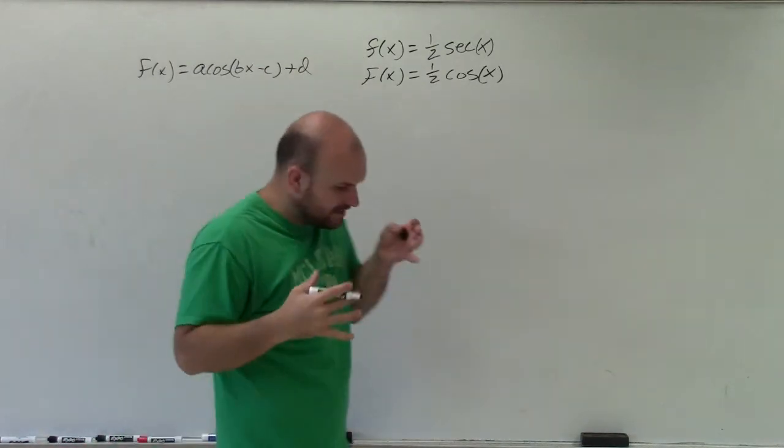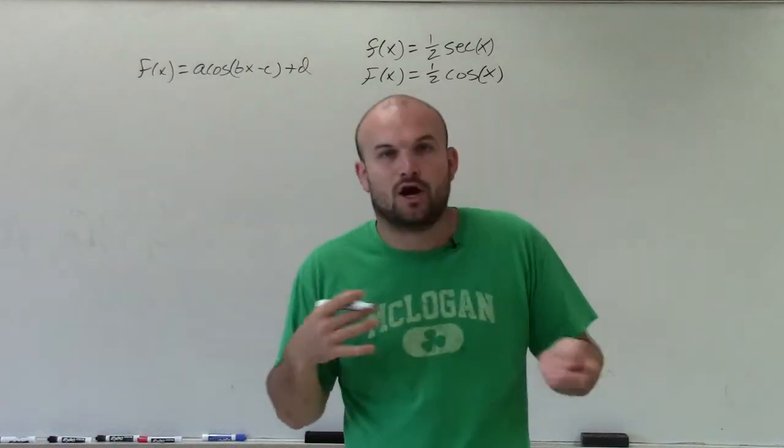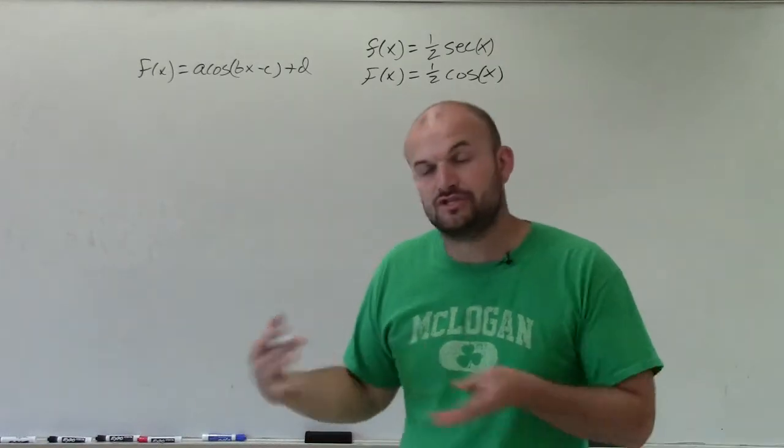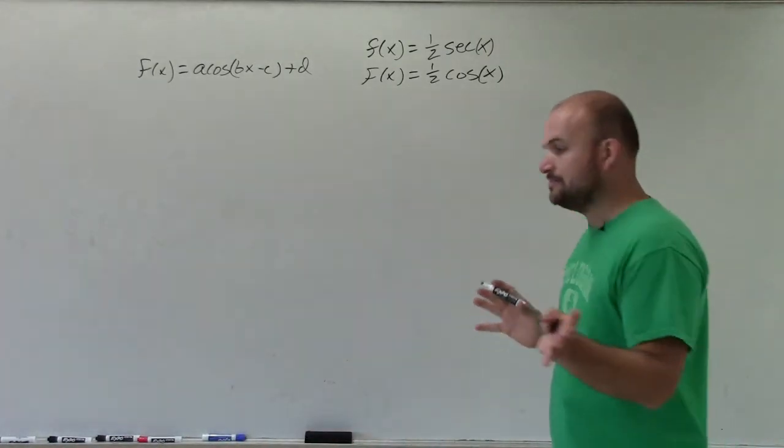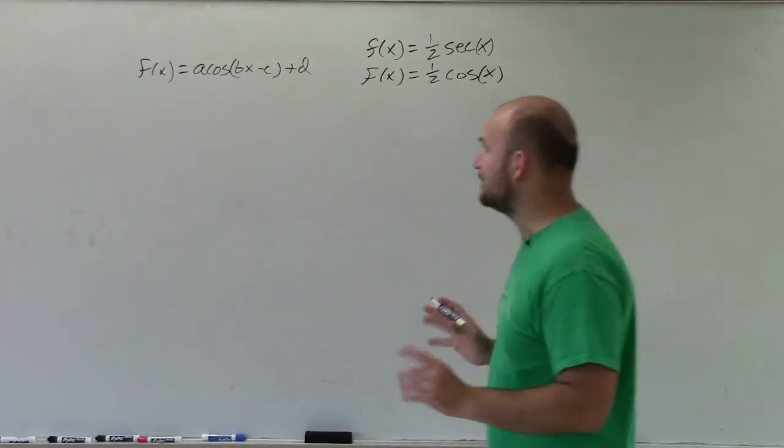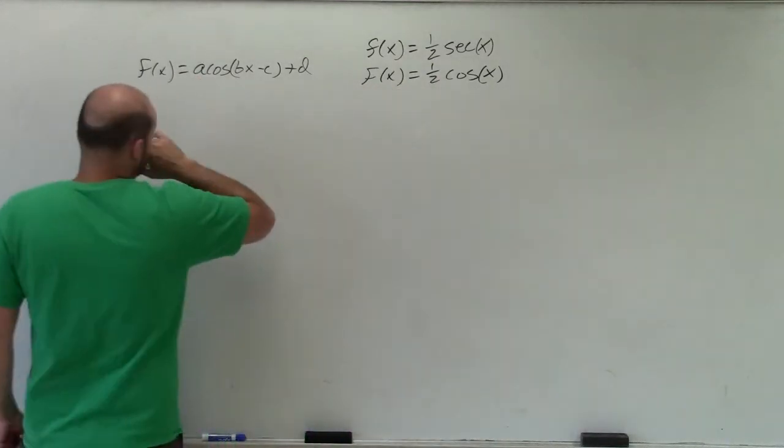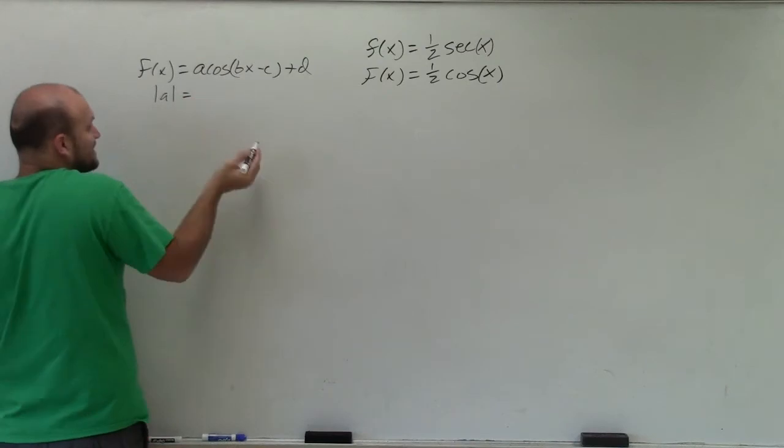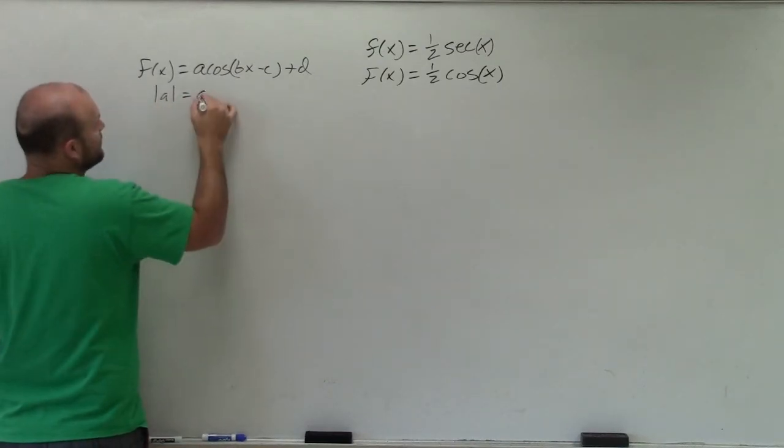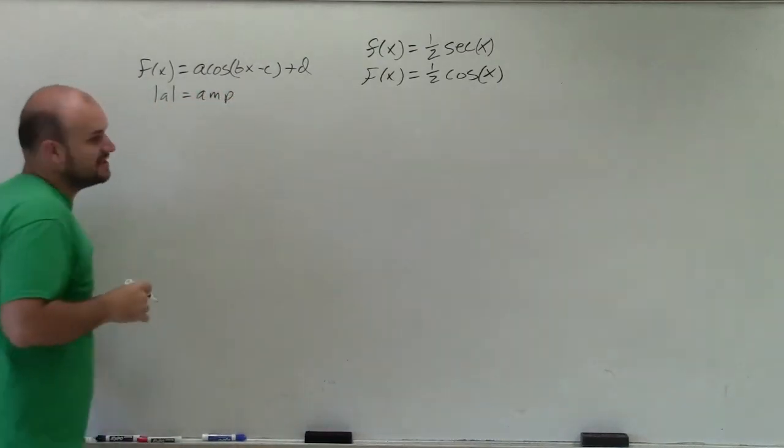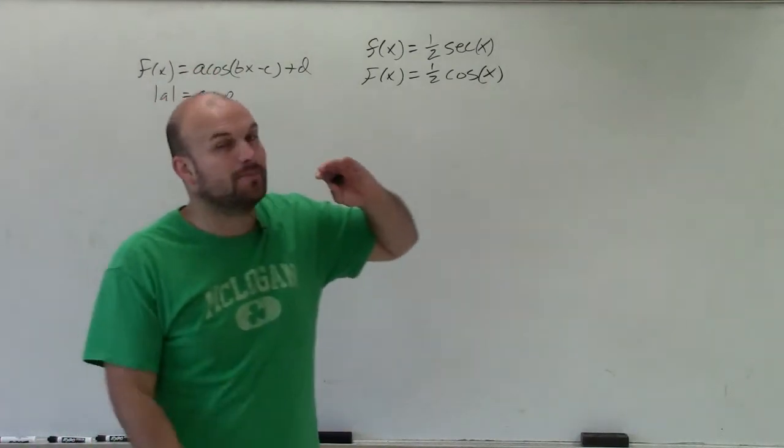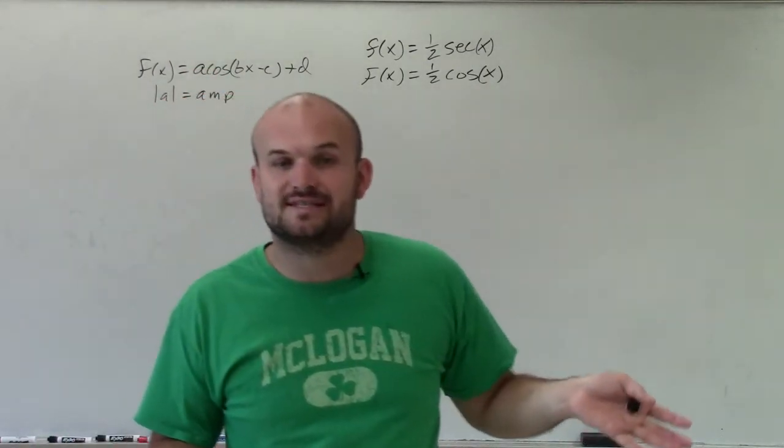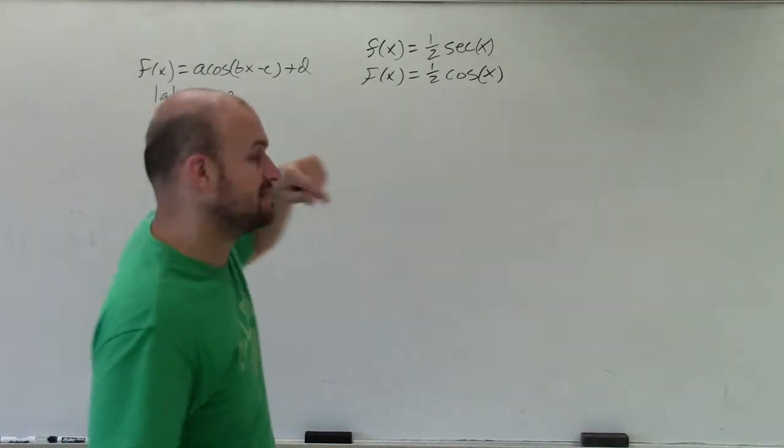These a, b, c, and d are all placements that can affect the graph, the shape and the size and the orientation of it. The only thing a really does for a cosine is affect its amplitude. So absolute value of a is what we call the amplitude, and that's going to be how high the graph is going to go up or down, or what we'd really call the half distance from the maximum to the minimum.